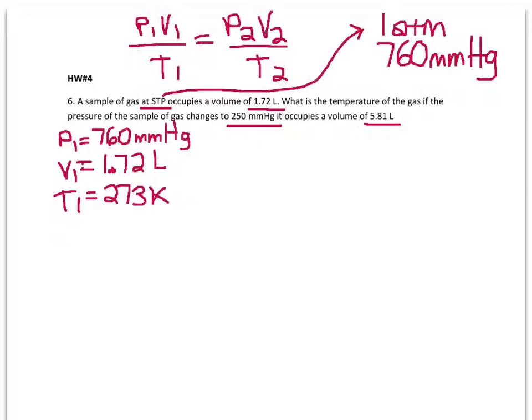So there are all of our 1 values. Now let's go into our two values, our P2, our V2, and our T2. That's what we're looking for. Our first pressure is 250 millimeters of mercury. Our first volume is 5.81 liters. And we do not know our second temperature.